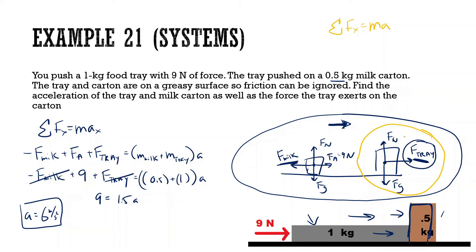Sum of all forces in x equals mass times acceleration. The only x force on the milk carton is the force of the tray, equal to mass of the milk carton (0.5) times acceleration (6) — so force of the tray is 3 newtons. By Newton's third law, the milk carton pushes back with 3 newtons in the opposite direction.